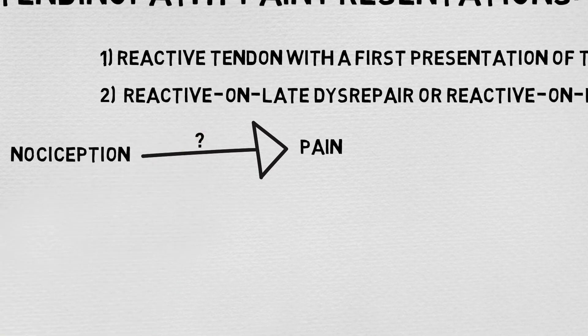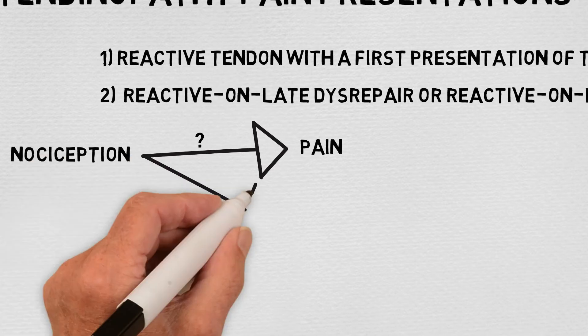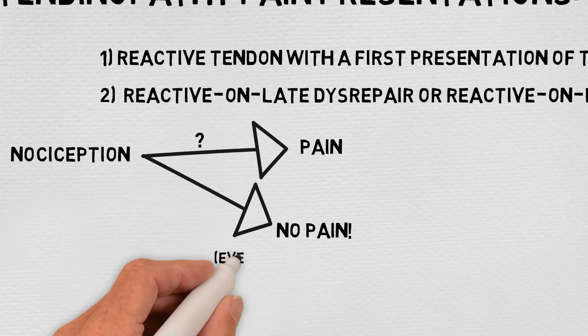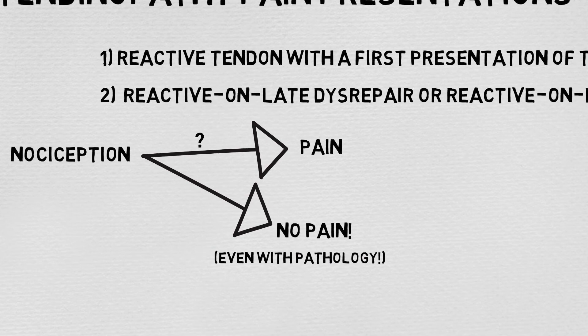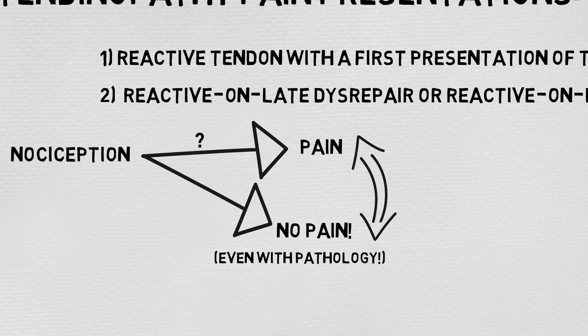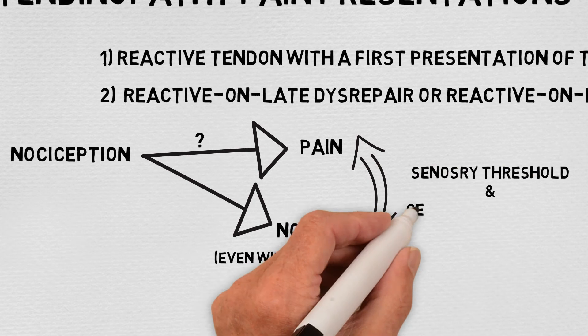Theoretically, either of the two presentations may increase expression of nociceptive substances and their receptors, which in turn increases stimulation of the peripheral nerve and is interpreted as pain. So when we see studies showing tendons with abnormal imaging but no pain, it suggests that for some reason a nociceptive threshold has not been reached, or some sensory modulation has occurred centrally.